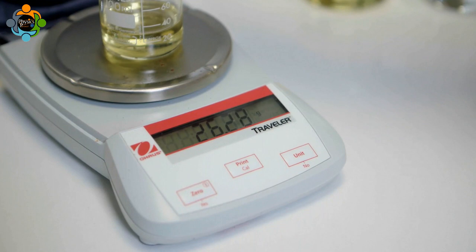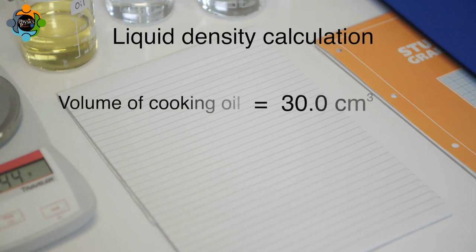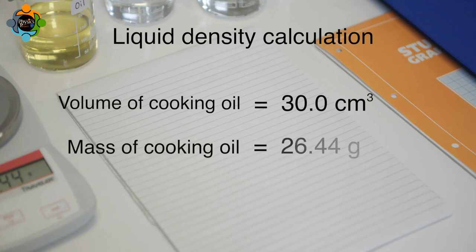The mass of the liquid is recorded. The same equation is used to calculate the density of oil: density equals mass over volume. The volume of oil used was 30 centimeters cubed and the mass recorded was 26.44 grams, giving a density of 0.881 grams per centimeter cubed.